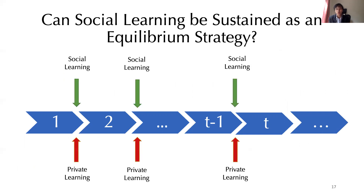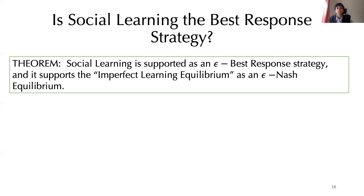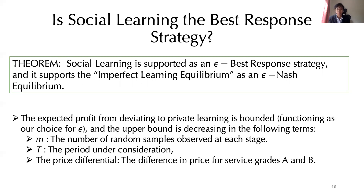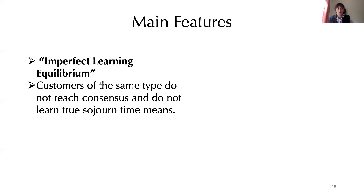We now ask: is social learning even an optimal choice for customers? Can social learning be justified as an equilibrium strategy, or are customers better off using their own personal experiences? We can show that while the inherent stochasticity of the system excludes any sort of best-response strategy, social learning emerges as an epsilon best response, supporting the imperfect learning equilibrium as an epsilon-Nash equilibrium. Indeed, the expected profit from deviating to private learning is bounded, and the stronger the customer's beliefs — the more observations he has consulted and the more periods he has built his beliefs on — the less willing he is to deviate from social learning.